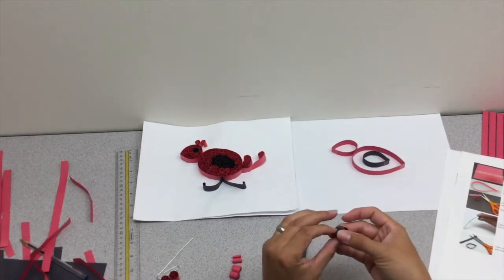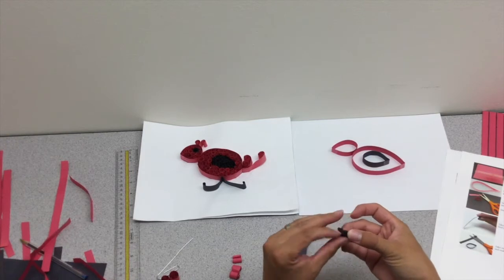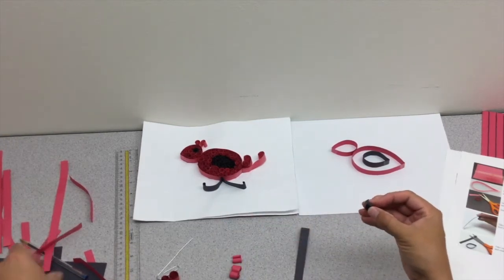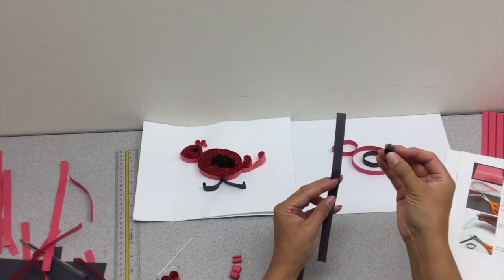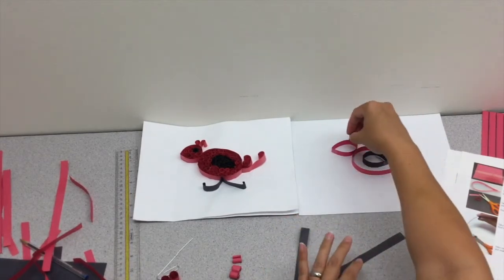Lastly, before you start quilling all the main red shapes, take one full strip of black and create a coil. This coil will become the bird's eye.